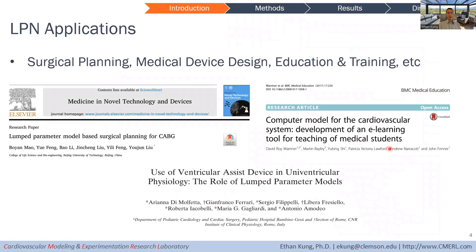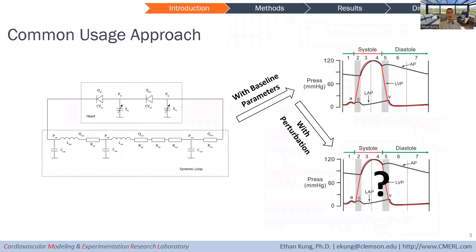LPNs have been applied to do many different things. People have tried to investigate surgical planning, medical device design, testing, or use them for education. The typical use of the LPN involves having a circuit architecture and tuning the parameters to describe some kind of baseline target physiology that you're interested in investigating.